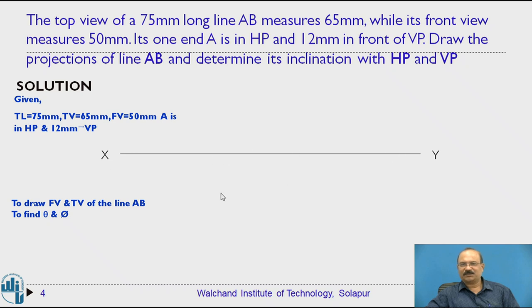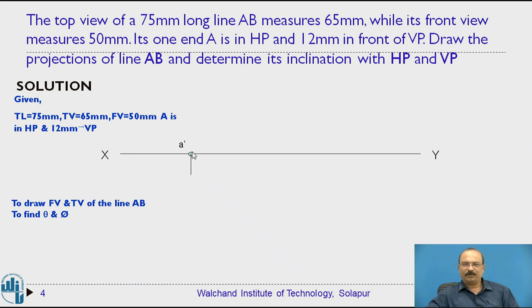First, draw the XY line, then locate point A on it. Since point A is in the HP, it is placed on the XY line — this is the front view location, marked as A dash. The point is also 12mm in front of the VP, so we measure 12mm below the XY line to locate A in the top view. A dash is the front view and A is the top view of point A.